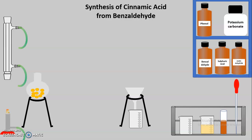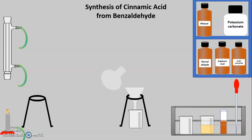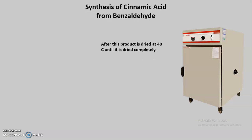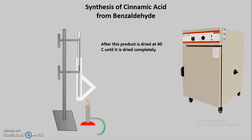Once we have the product, the next step is recrystallization. The assembly for recrystallization uses hot water as solvent. We add hot water to the product and heat the solution until the product dissolves. While the solution is hot, we carry out filtration, and after cooling we obtain crystals of cinnamic acid. After recrystallization, the next step is determination of the melting point after drying. Using an oven at 40°C we dry the product, then use a thiele tube to determine the melting point of the cinnamic acid.